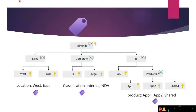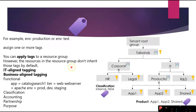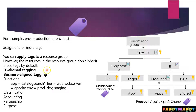For IT-aligned tagging, you can focus on workload, application function, or environment criticality. This reduces monitoring complexity and simplifies management decisions based on operational requirements. For example, if printers are 80% busy from an IT perspective, that information appears on a monitoring screen and you can plan to order more printers based on the IT-aligned tagging data for that specific area.